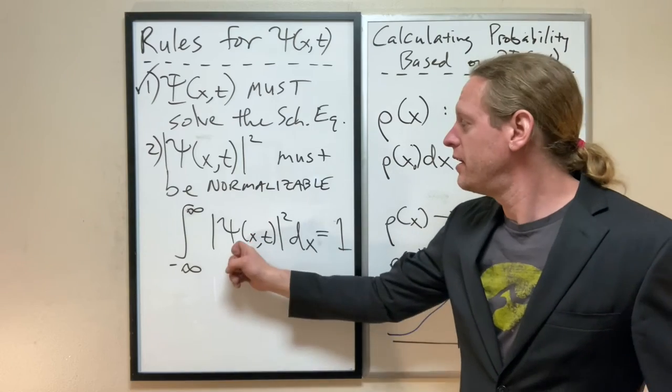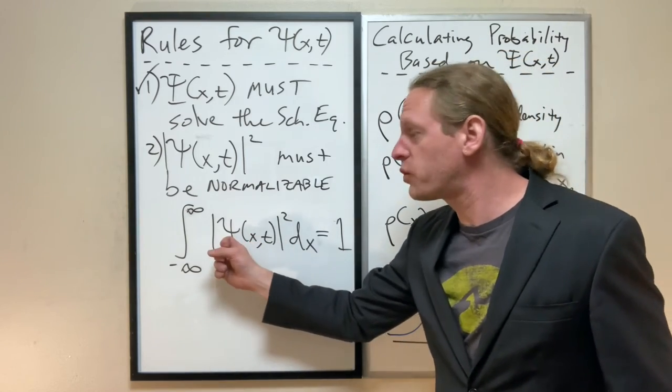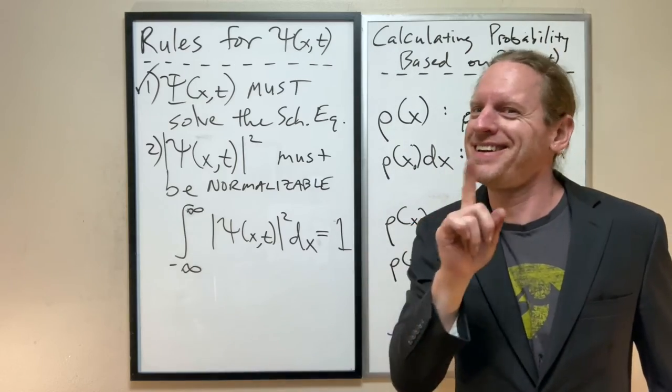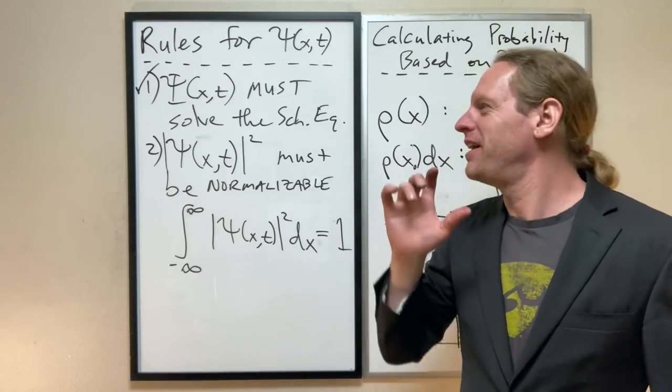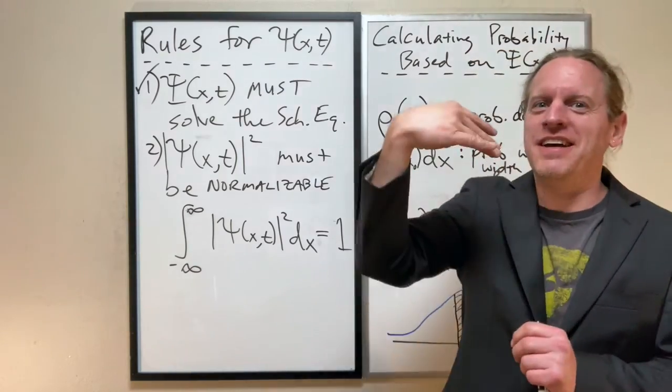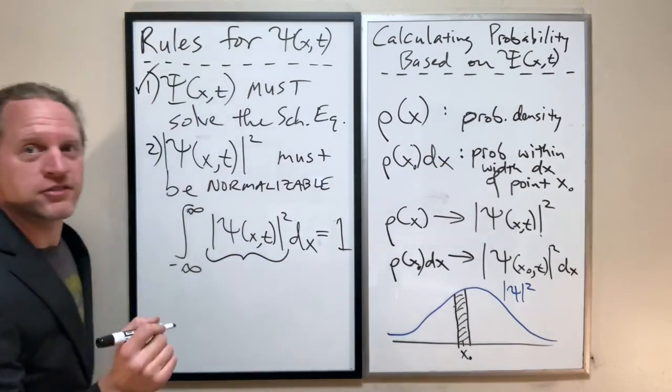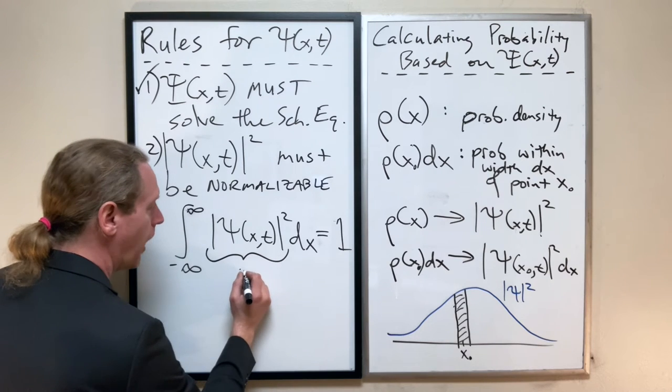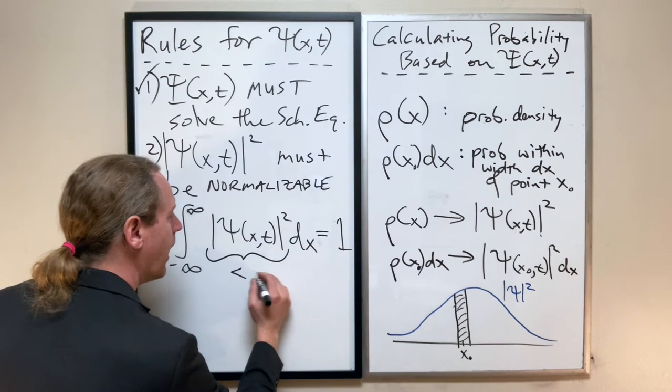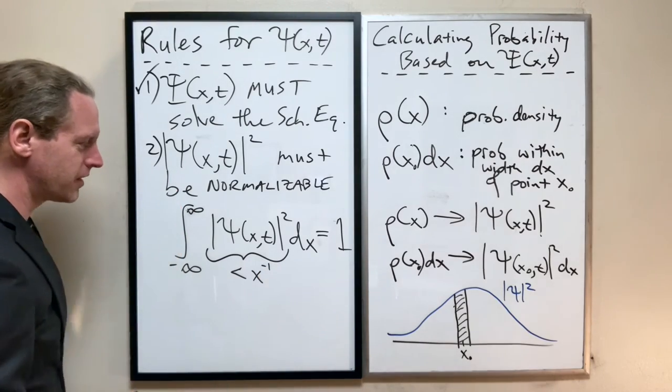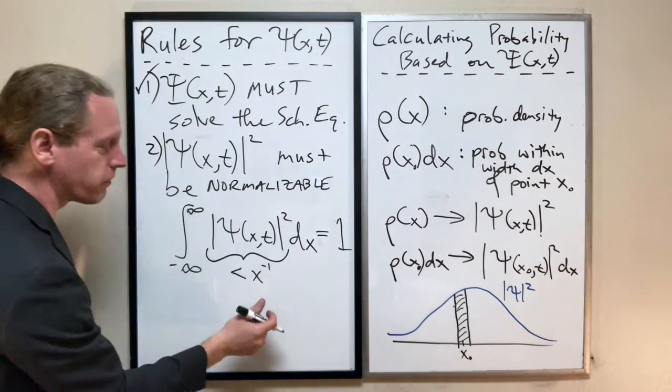So what this means is that psi, or well, psi squared must approach zero faster than, if you recall, there is a limit, and the result is that this function here must be smaller than, what is it, x to the minus one, or one over x.